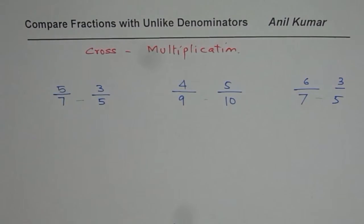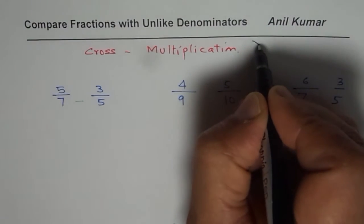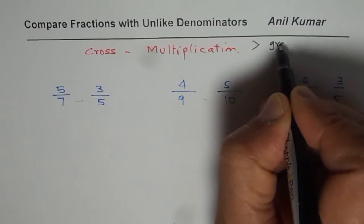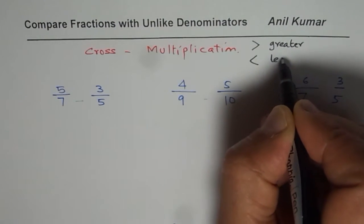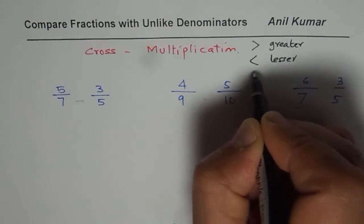That symbol could be either greater than, so those symbols which we are looking for are either this, which means greater, or it could be lesser, or equal to.